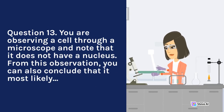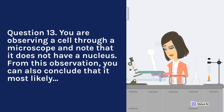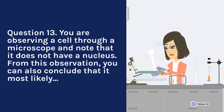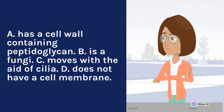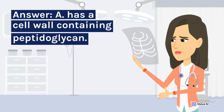Question 13. You are observing a cell through a microscope and note that it does not have a nucleus. From this observation, you can also conclude that it most likely: A. Has a cell wall containing peptidoglycan. B. Is a fungi. C. Moves with the aid of cilia. D. Does not have a cell membrane. Answer: A. Has a cell wall containing peptidoglycan.